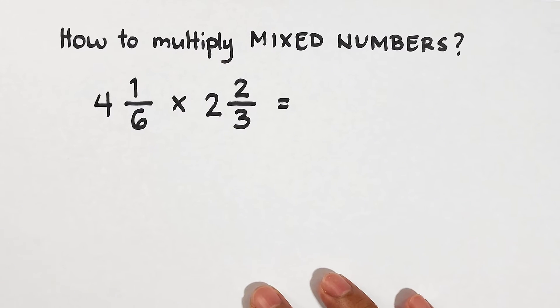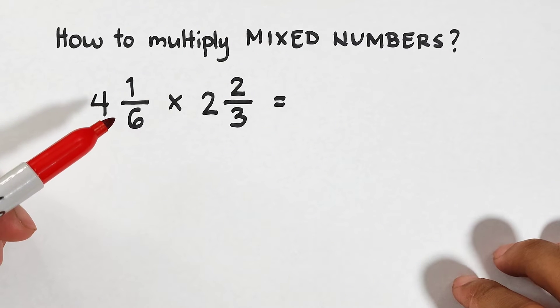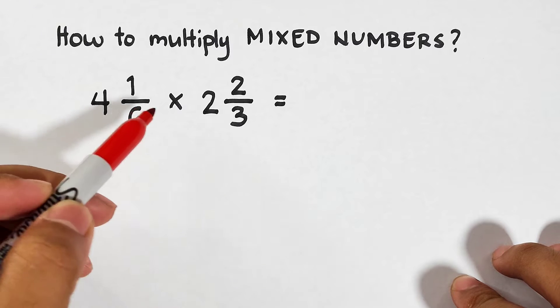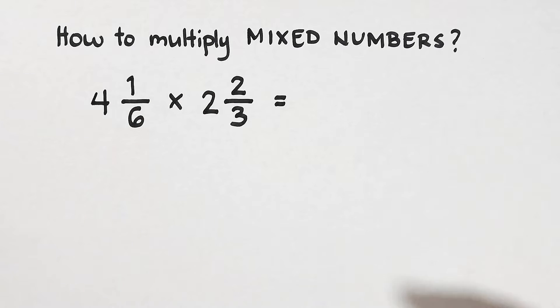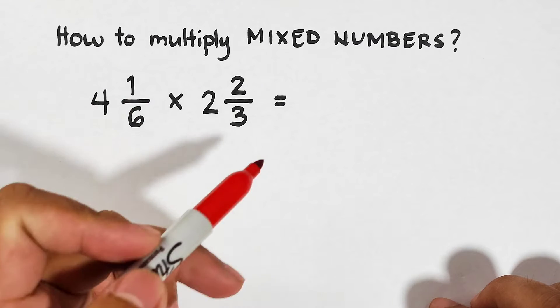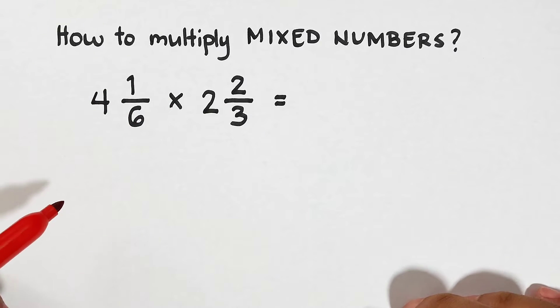For this video, I will give you two examples on how to multiply mixed numbers. And let's start with example number one. In number one, we are given the mixed numbers 4 and 1 over 6 times 2 and 2 over 3. Now basically, we cannot directly multiply these mixed numbers to another mixed number. So what we need to do is to convert these mixed numbers into improper fraction.